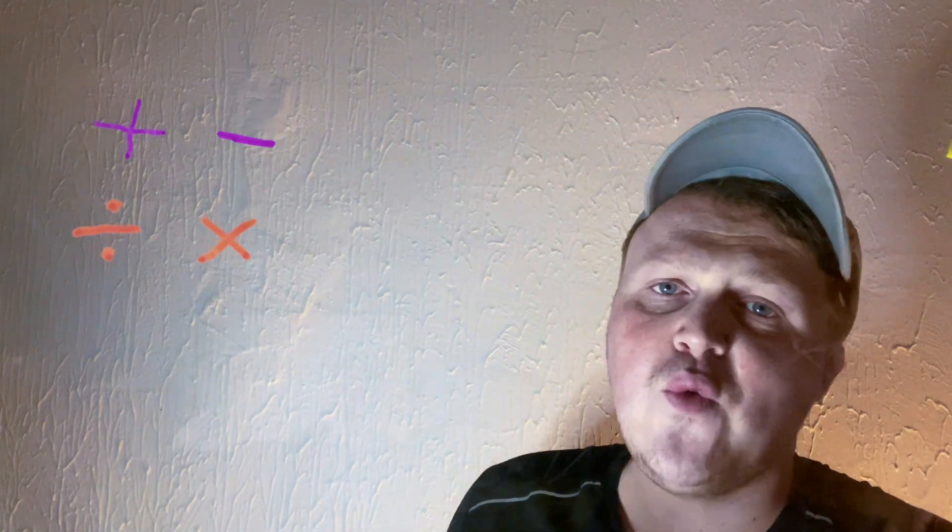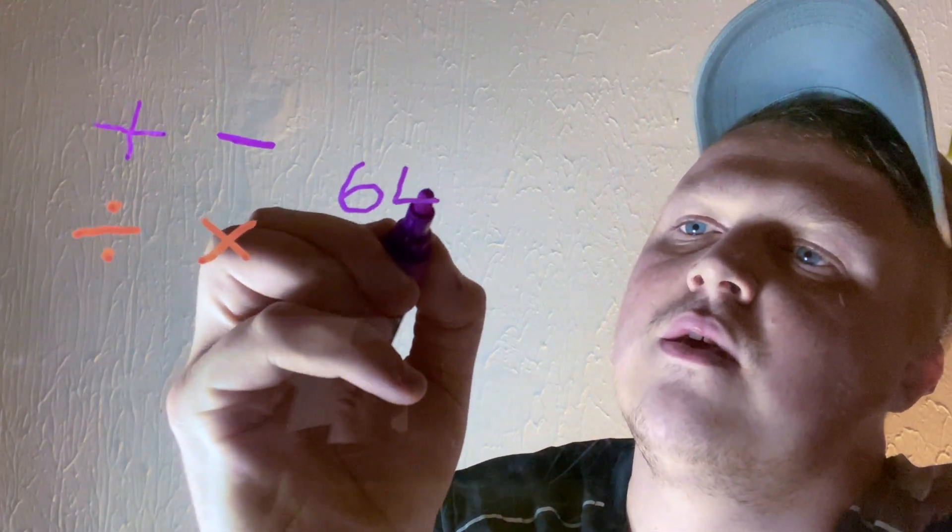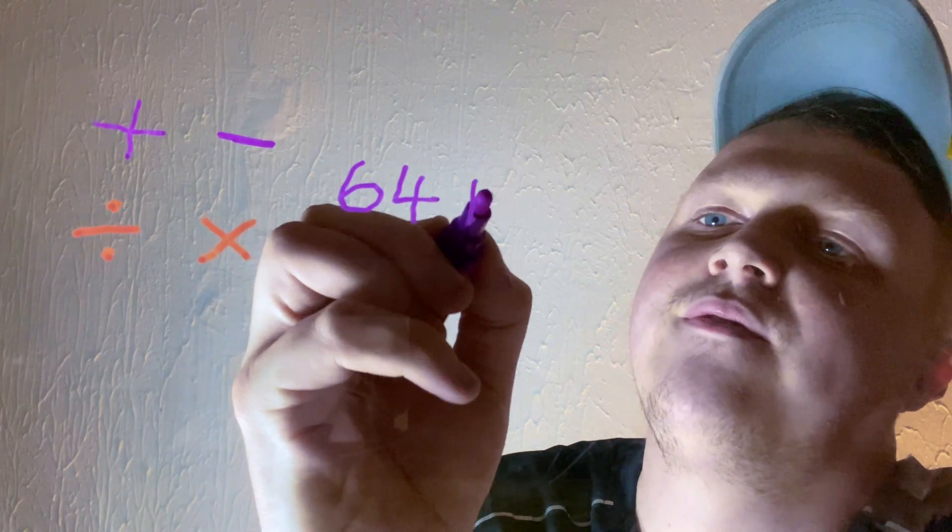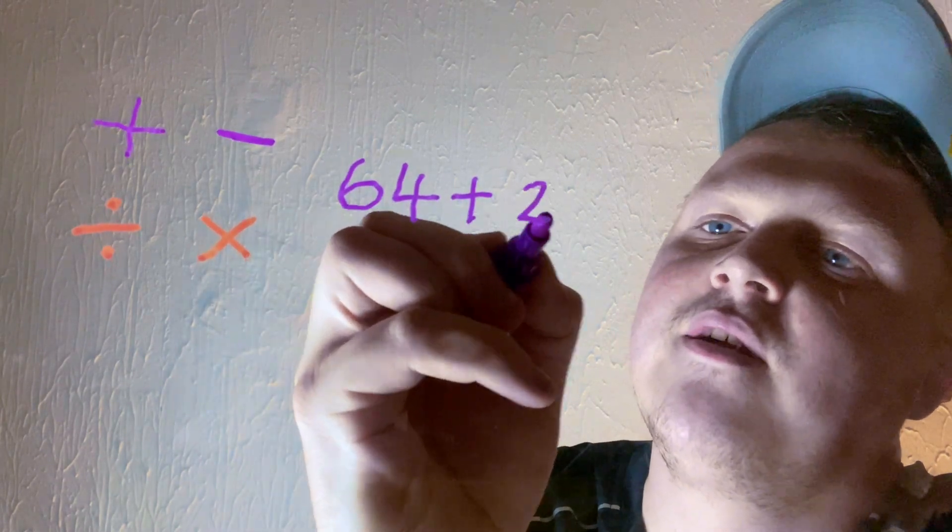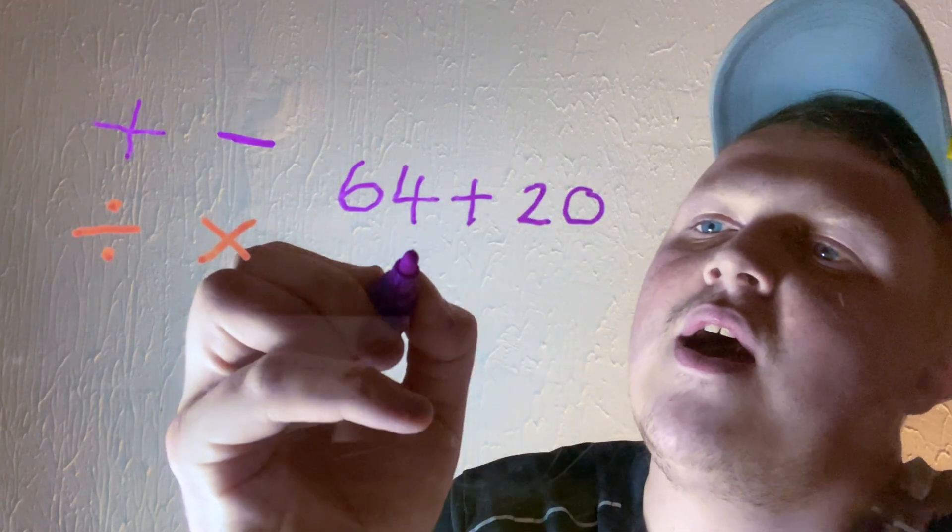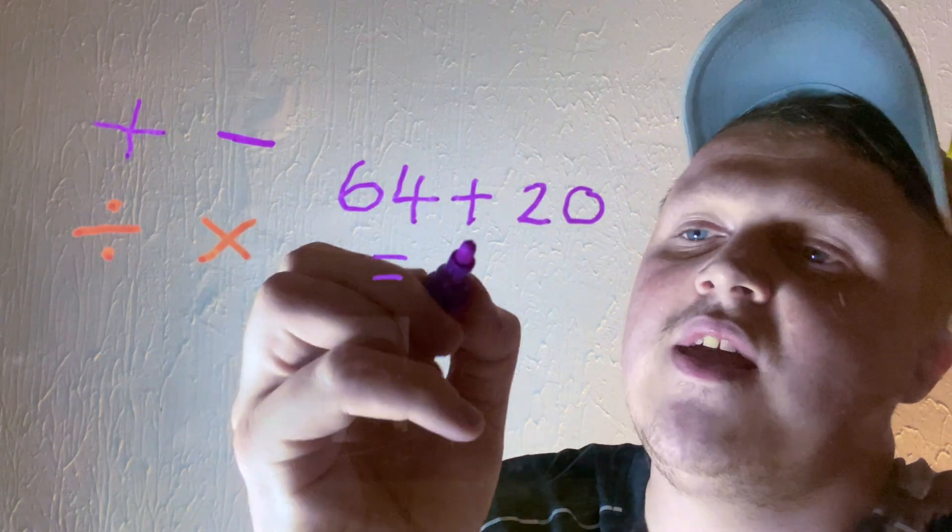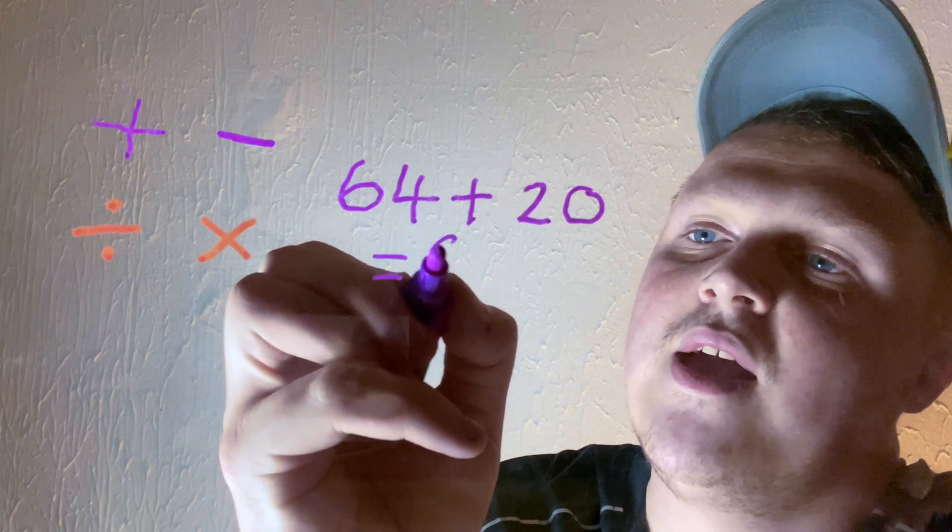So if we've got the number 64, we add 20 to it. Our answer would be 84.